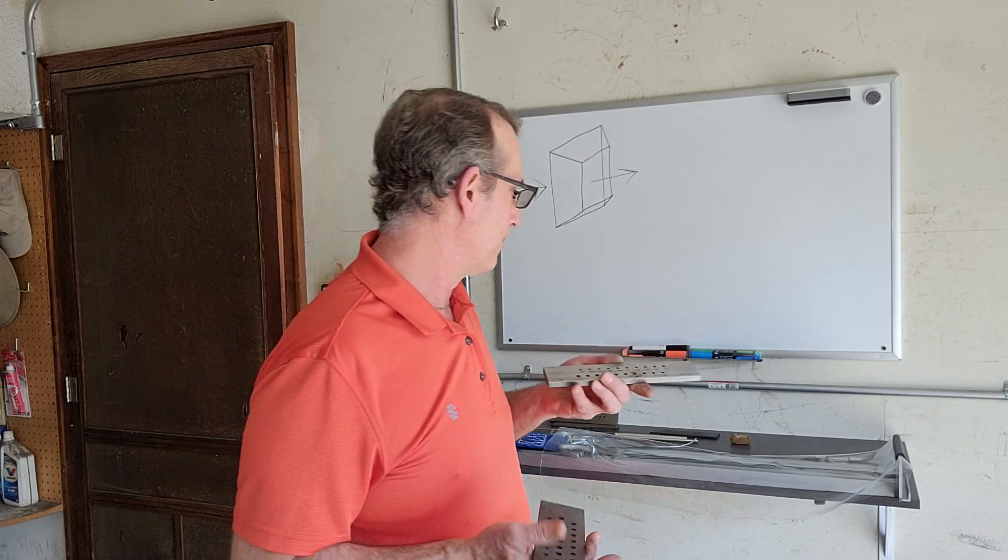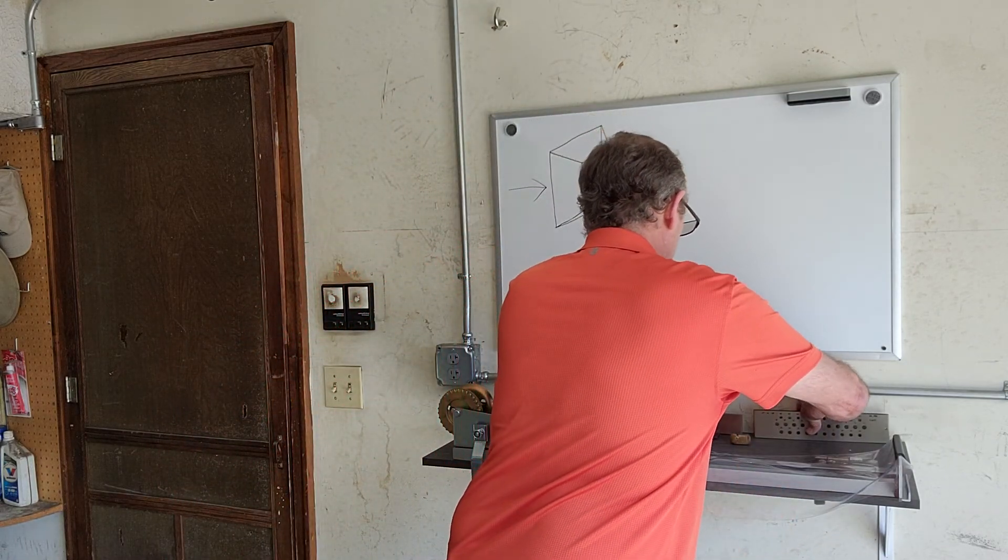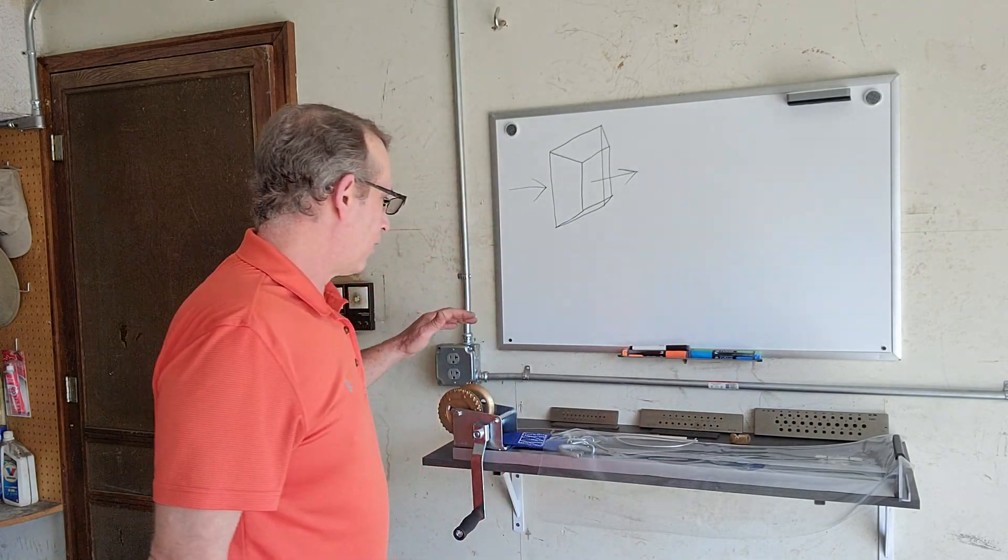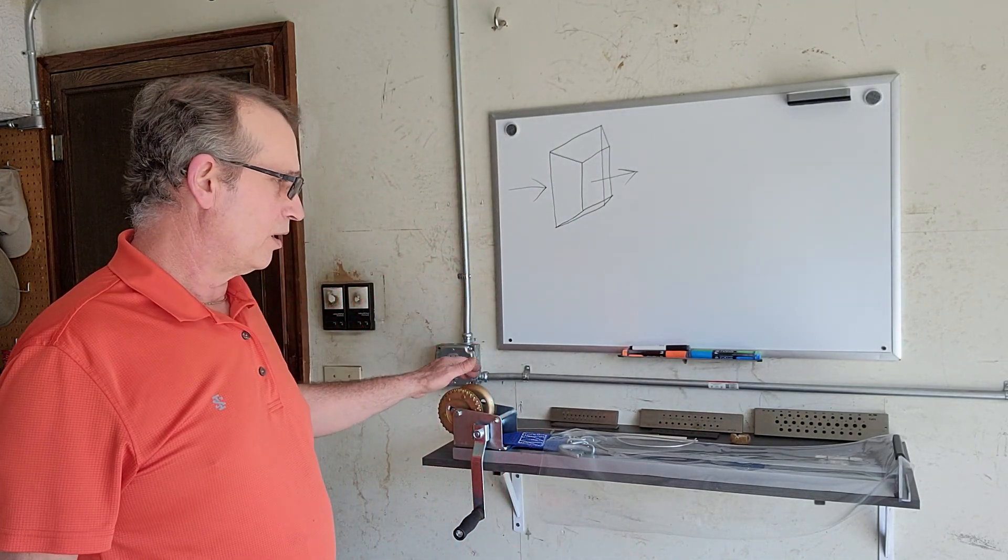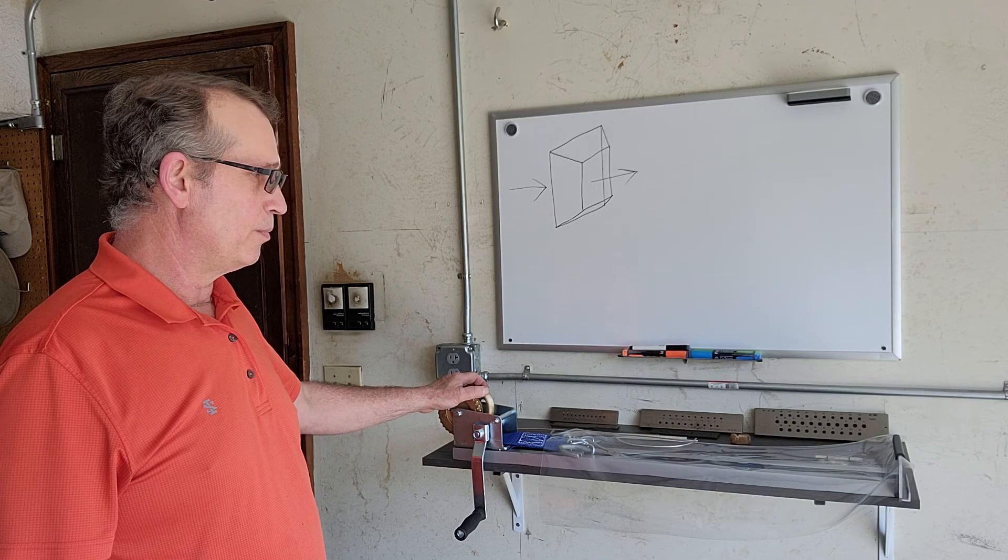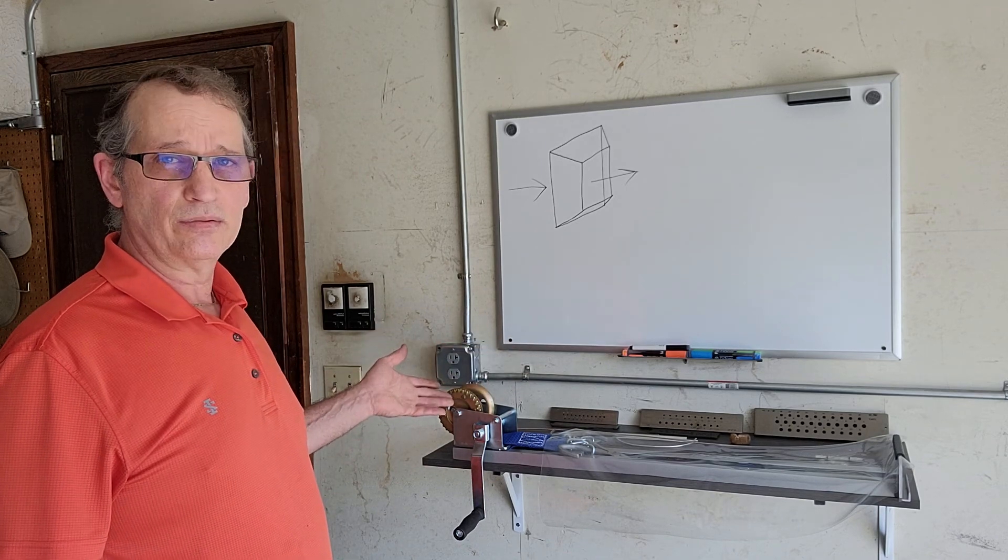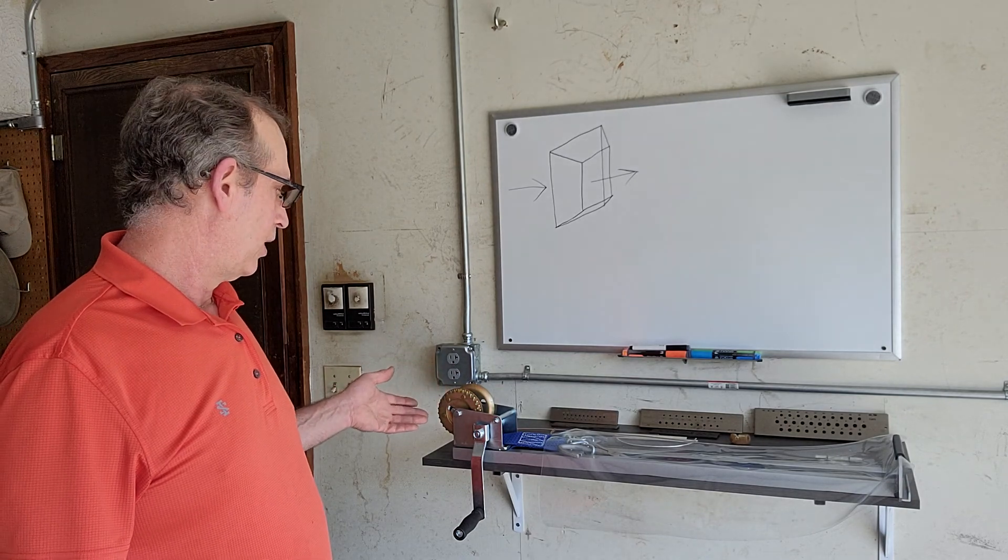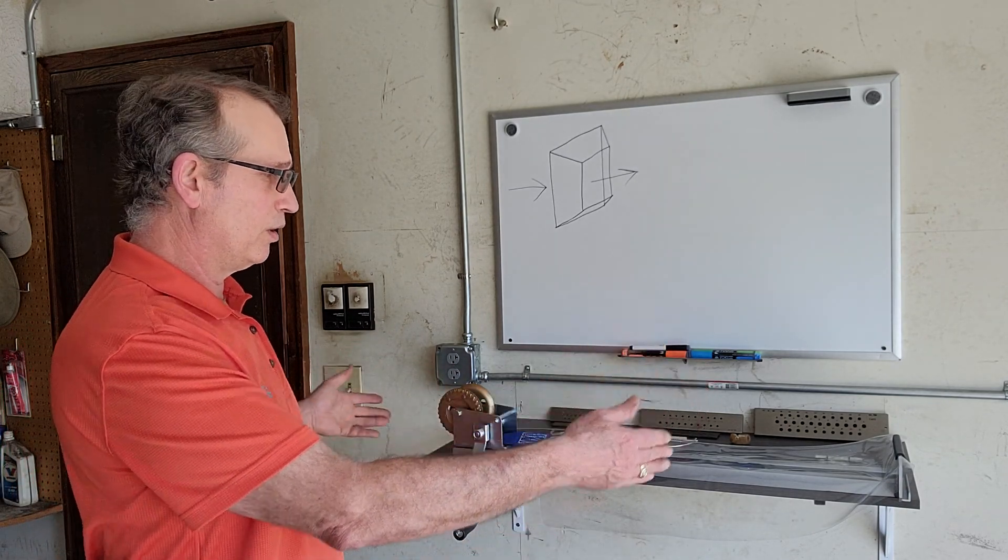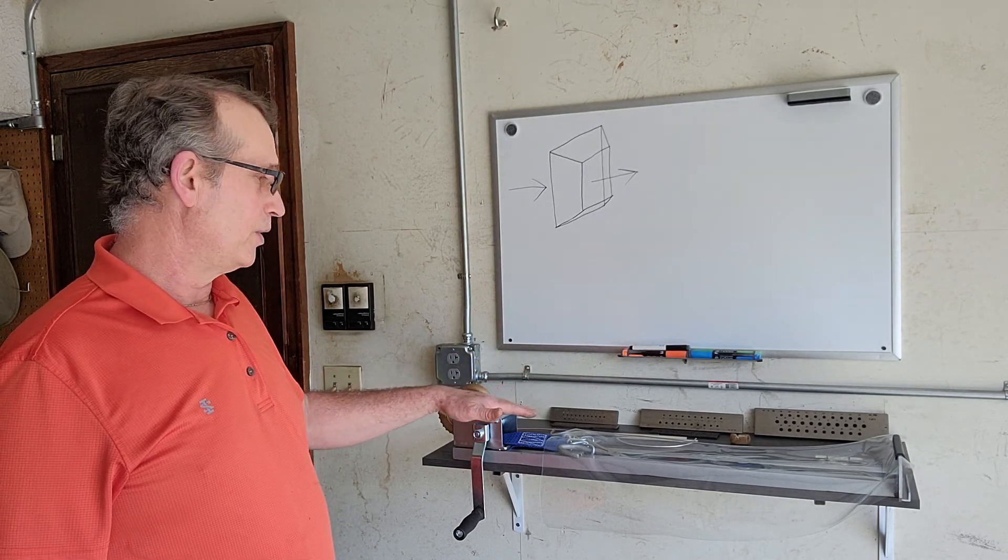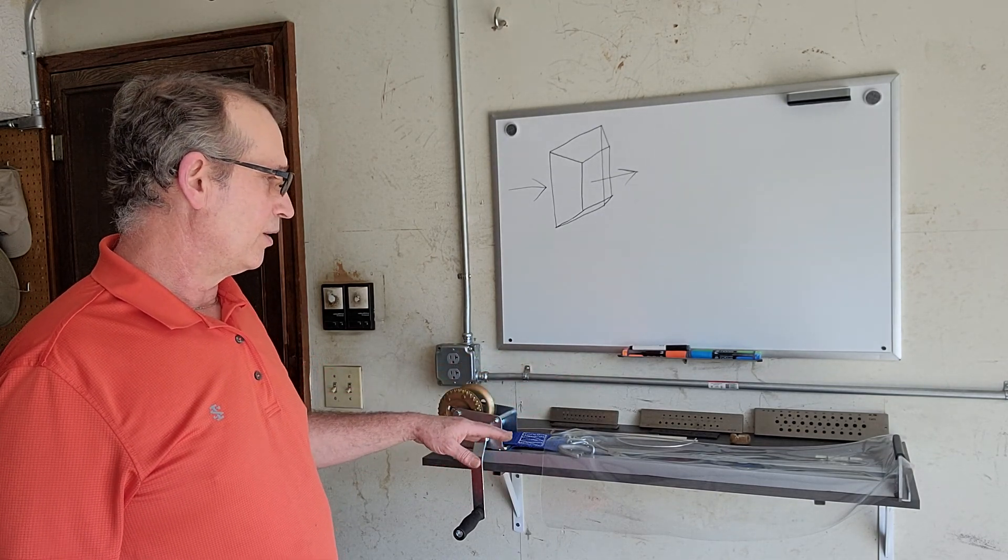Now to make wire drawing easy we actually produce a wire drawing mill and I want to present that to you now. This is the WDM 32 and the 32 refers to the overall length of the mill, it's 32 inches.